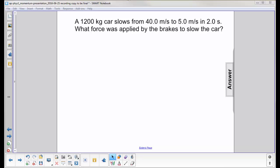A 1200 kilogram car slows from 40 meters per second to 5 meters per second in a time period of 2 seconds. What force was applied by the brakes to slow the car?